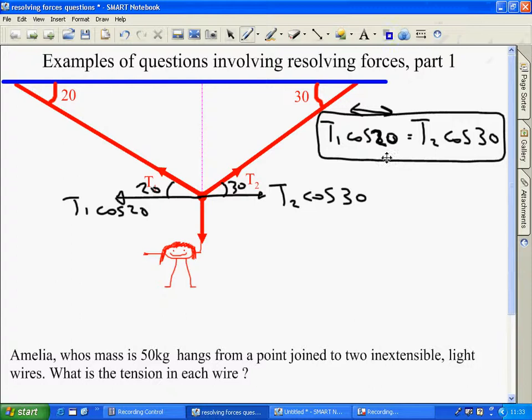If I now resolve vertically, forces vertically are equal. Downwards, so resolving vertically, downwards we have Amelia of 50 times acceleration due to gravity.